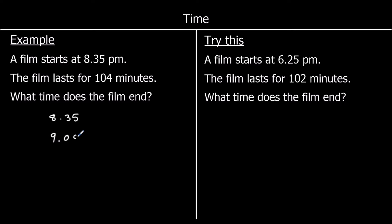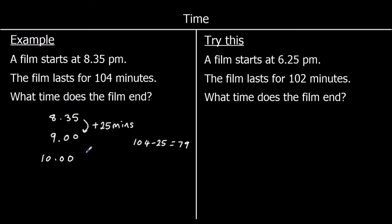So let's go to the next hour. From 8.35 to 9 o'clock, we need to add on 25 minutes. There's a total of 104 minutes, so 104 take away 25 — how many minutes left? If we took off 24 we'd get to 80, and take off another one, so that's 79 minutes left. We can go to 10 o'clock by adding on another 60 minutes. 79 take away 60 is 19, so 19 more minutes, and that gets us to 10.19pm.